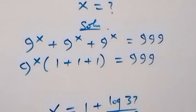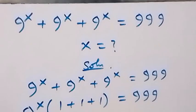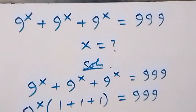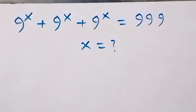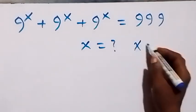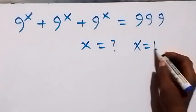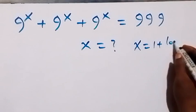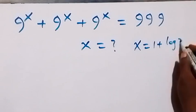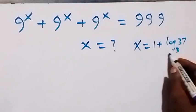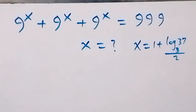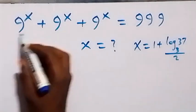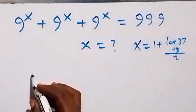Let's check whether this satisfies the given problem. x equals 1 plus log₃(37) over 2. Substituting this value of x, we have 9 raised to the power of x.